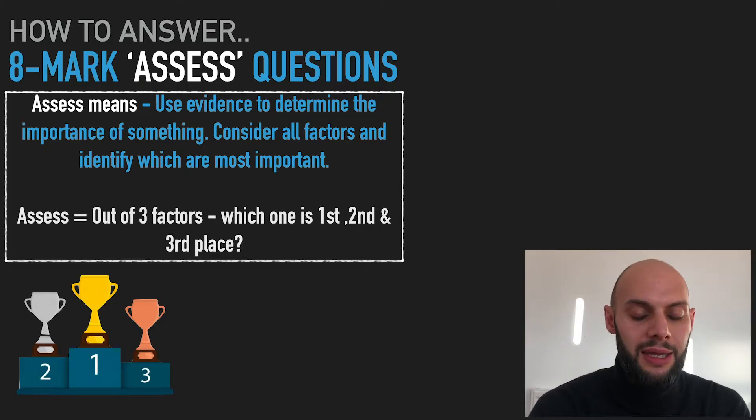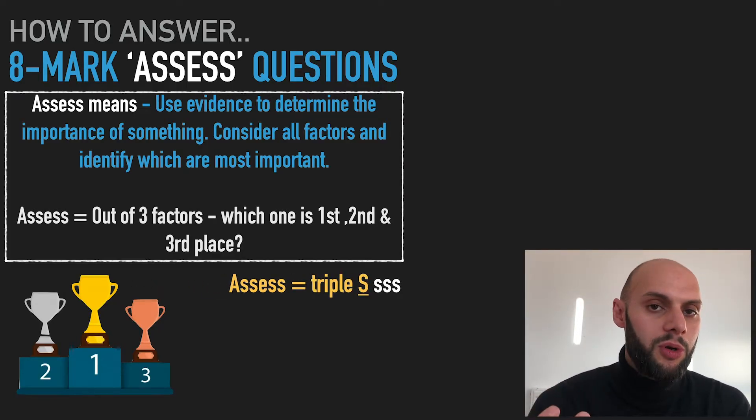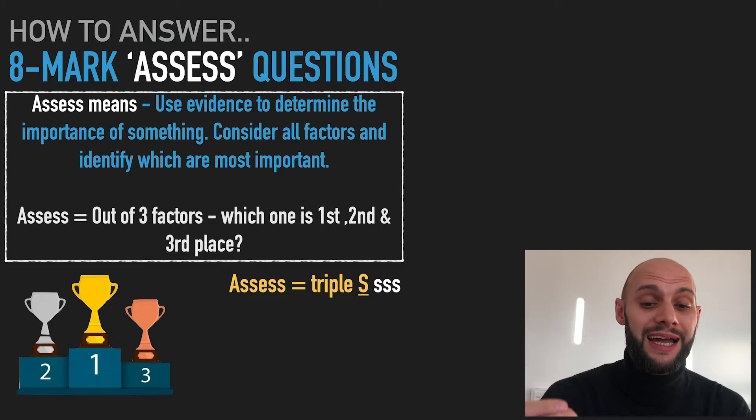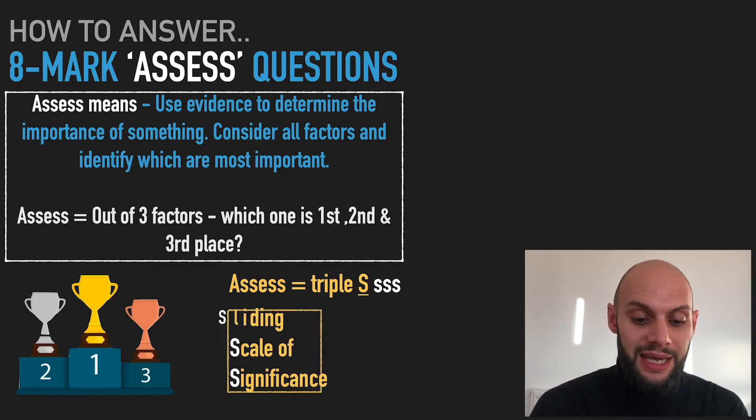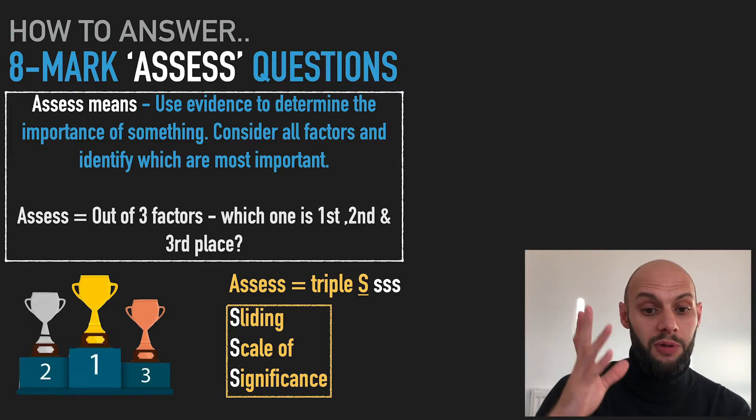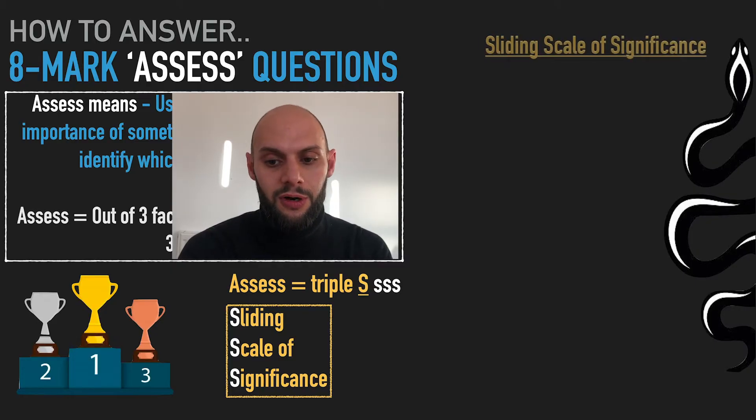So you could memorize it by gold, silver, bronze. What I want you to remember when there's an assess question: think about triple S. Triple S, it's not like the evaluate where I said triple O for on one hand, on the other hand, overall, but triple S stands for sliding scale of significance. Imagine there's a scale and you have to put three things from one to three of significance.